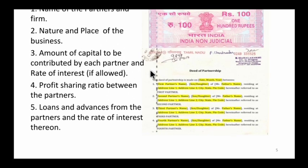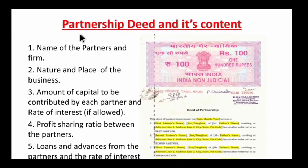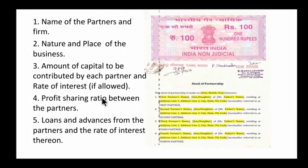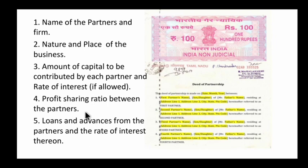If the partnership deed is silent on interest on capital, according to the Partnership Act 1932 it is disallowed. Point 4 is the profit sharing ratio (PSR) between the partners, which should also be disclosed in the partnership deed. Point 5 is loans and advances from partners and the rate of interest thereon — whatever loan a partner has given to the firm, the rate of interest on it must be disclosed in the deed.